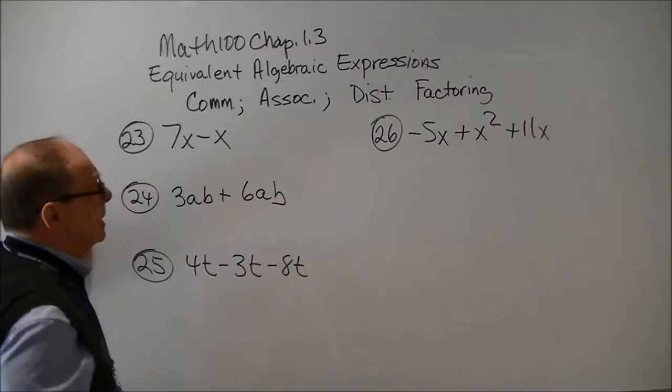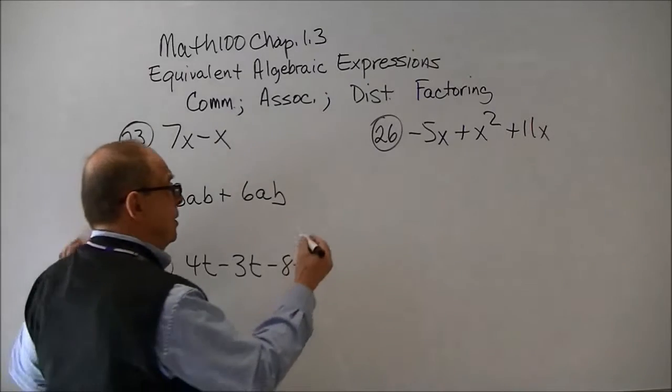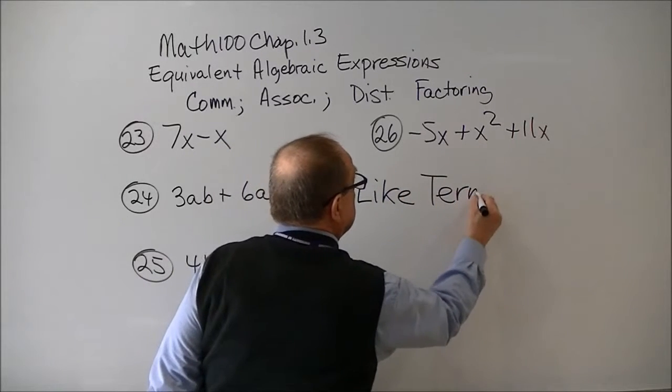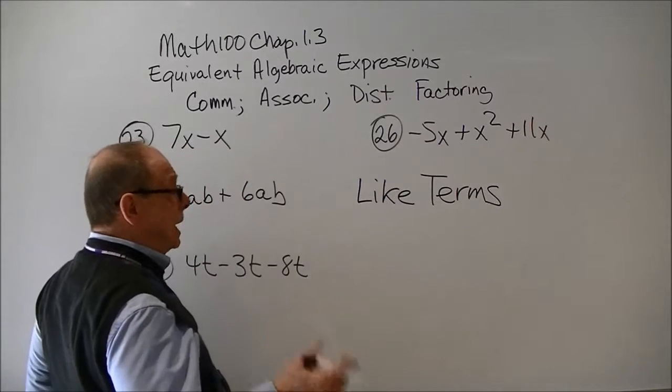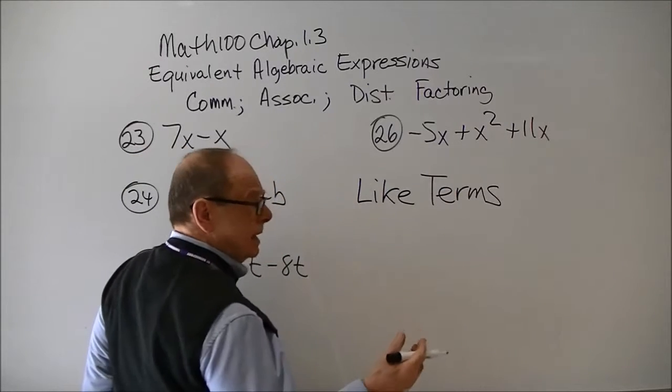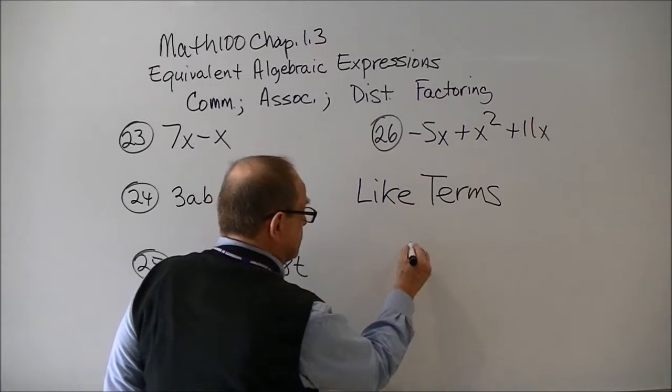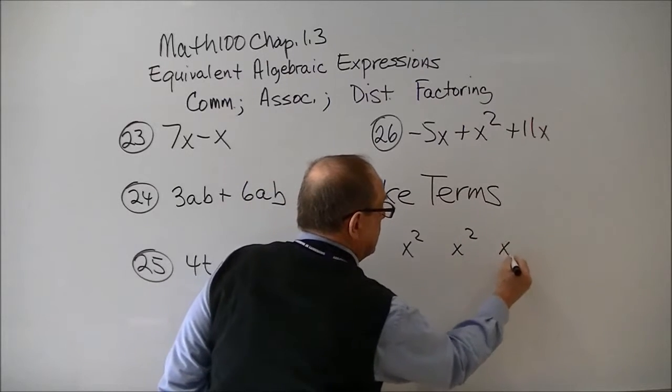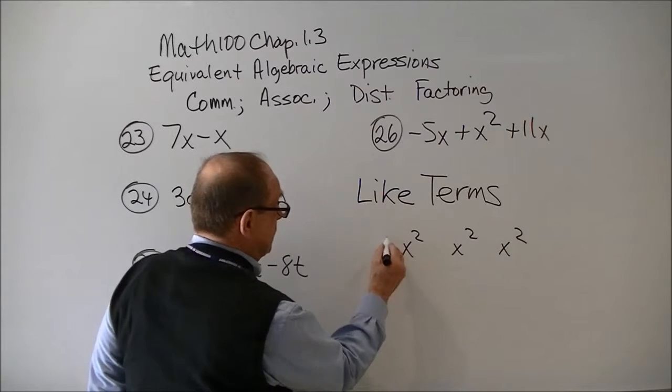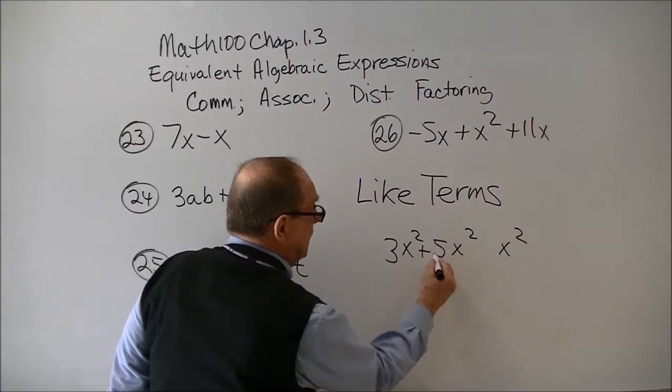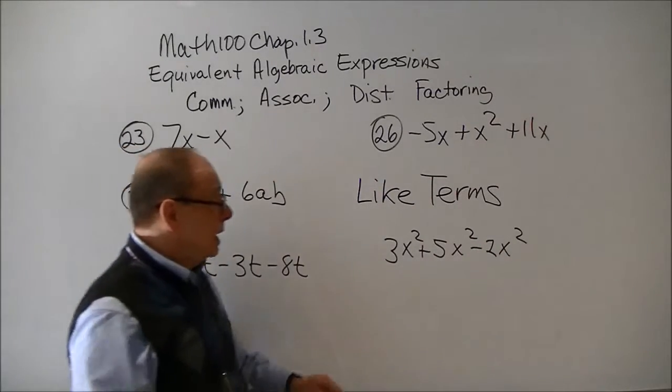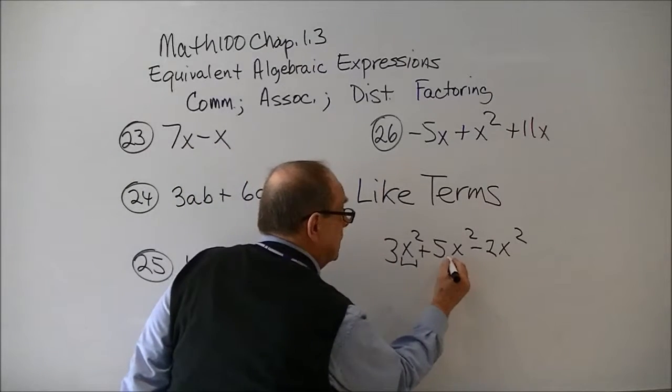As we finish up this lesson, we're getting to something that's called like terms. And what is a like term? Well, by definition, a like term is any term that has, in a sense, the same variable. So something whose variables were x squared as a variable, these would be like terms. You might have like 3x plus 5x squared, of course, minus 2x squared. These would be like terms because the variable is exactly the same.